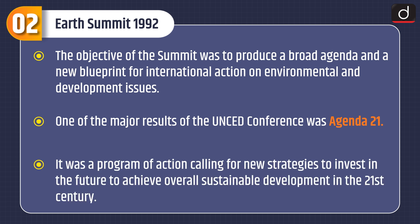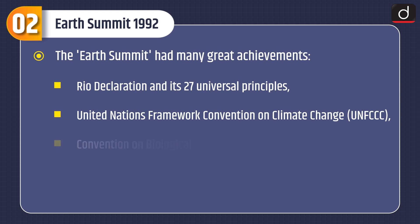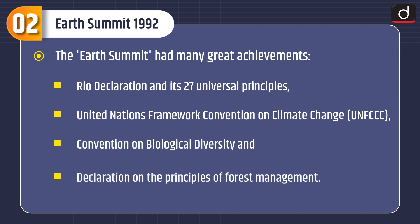The objective of the summit was to produce a broad agenda and a new blueprint for international action on environmental and development issues. One major result was Agenda 21, a program of action calling for new strategies to invest in the future and achieve sustainable development in the 21st century. The Earth Summit's achievements included the Rio Declaration and its 27 universal principles, the United Nations Framework Convention on Climate Change, the Convention on Biological Diversity, and the Declaration on the Principles of Forest Management.